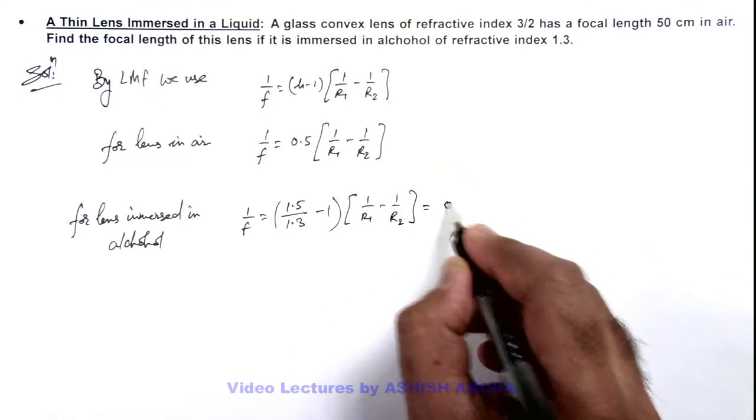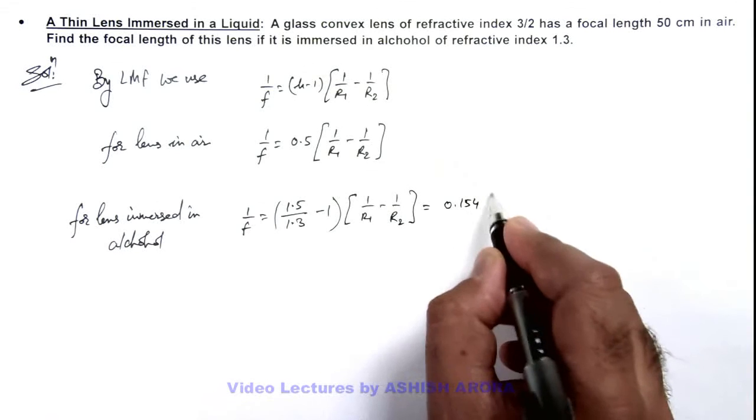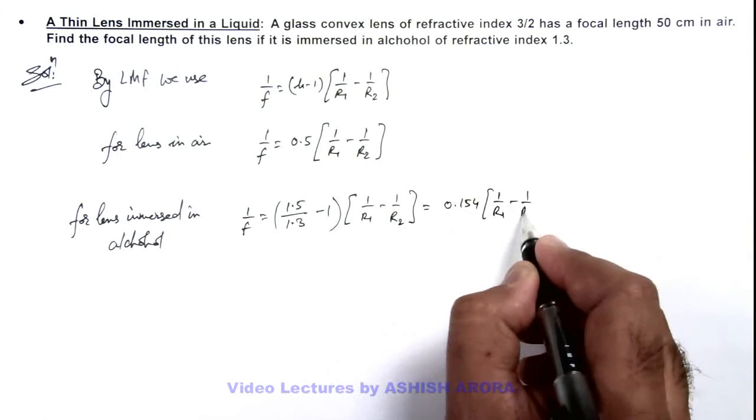This can be written as 0.154 times (1/r₁ - 1/r₂).